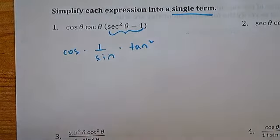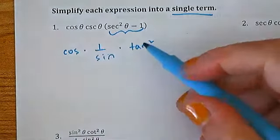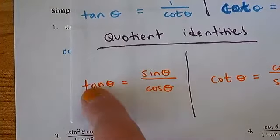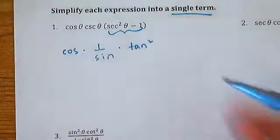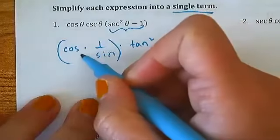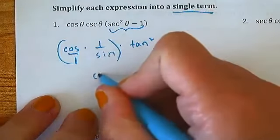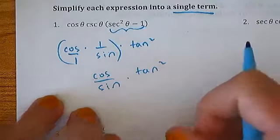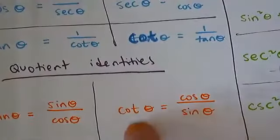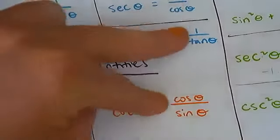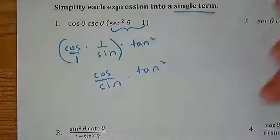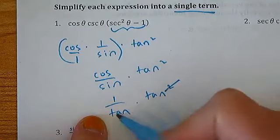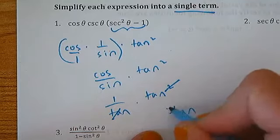From here there are many things you can do. You can focus on the tangent squared and substitute it — since tan is sine over cosine, tan squared is sine squared over cosine squared. Or you could make it one fraction. Cosine over sine is cotangent, and cotan is one over tan, so those two are equivalent. Either way, cancel and this is equal to tan.